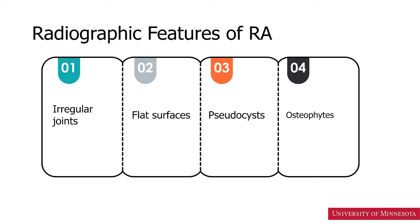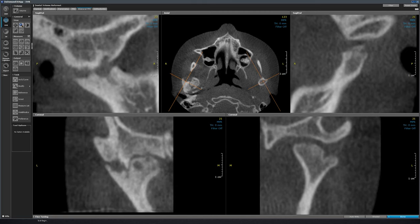The radiographic features of rheumatoid arthritis include irregular shape of the joint, condylar heads may become flat, there may be presence of pseudocysts and osteophytes. So a lot of features are similar to degenerative joint disease.